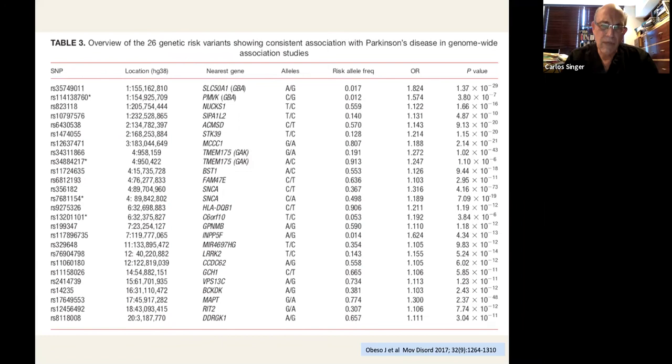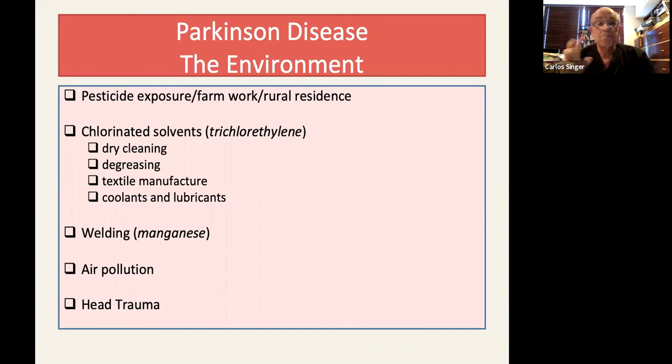So talking about the environment, we have pesticide exposure, farm work, rural residents, all of that has been defined as potential risk factors. You have chlorinated solvents, particularly trichloroethylene.